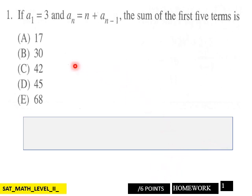Page one of the homework: if the first term a equals three and a to the nth equals n plus a to the n minus one, find the sum of the first five terms. Here are your choices, students. Six points for page one.